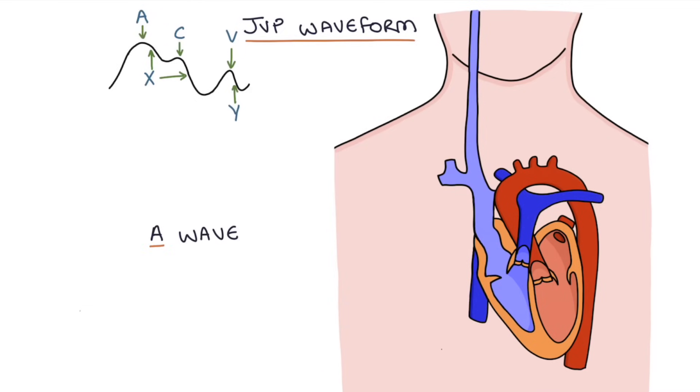The A wave happens during atrial contraction. So the right atrium is contracting against blood that's inside it. This pushes the blood through the tricuspid valve and into the right ventricle. But the increased pressure in the right atrium not only forces the blood downwards but also upwards. So the level of the blood in the internal jugular vein rises, and this rise is the A wave.